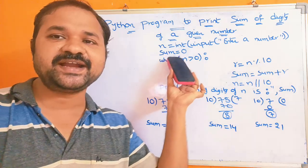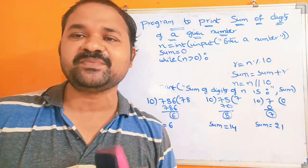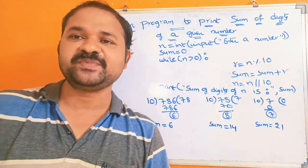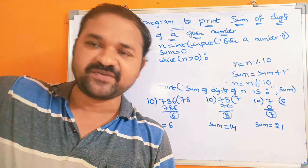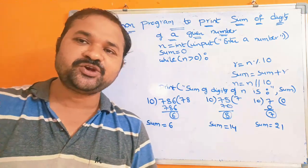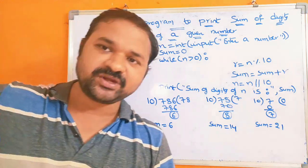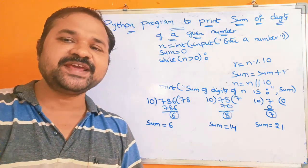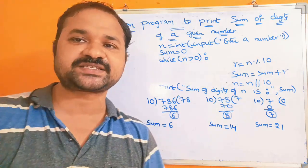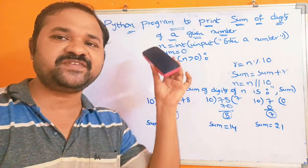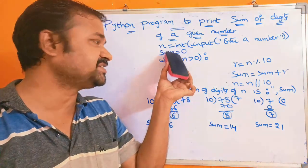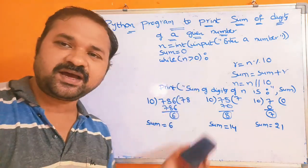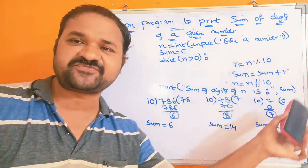If we add 0 to any number, the result won't change. For example, 0 plus 1 is 1, and 0 plus 9 is 9. So by adding 0 to any number the result won't change — that's why we take the initial value of sum as 0.